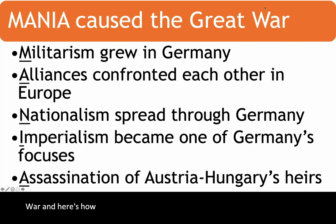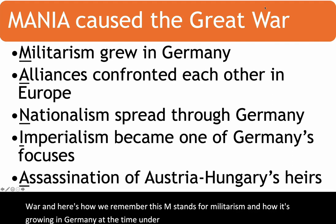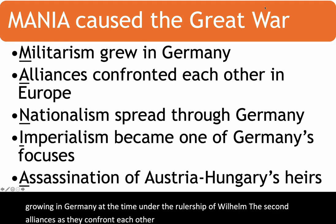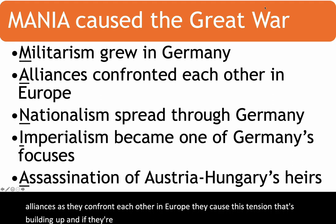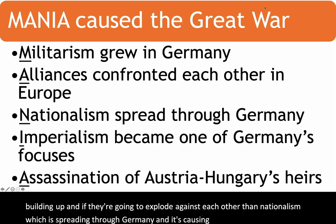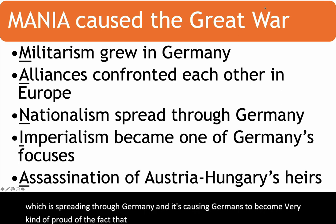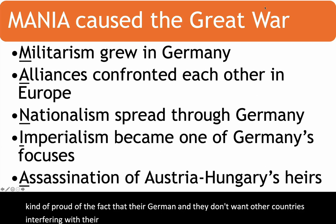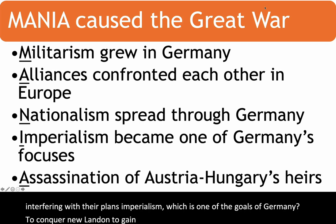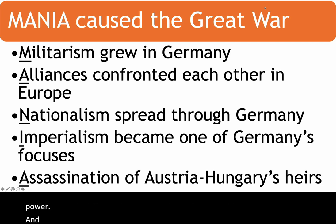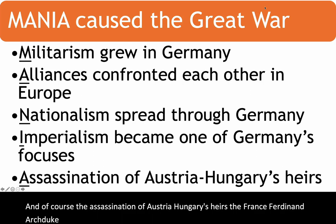Here's how we remember MANIA. M stands for Militarism, growing in Germany under Wilhelm II. A stands for Alliances, which confronted each other in Europe and caused a tension that was going to explode. N stands for Nationalism, spreading through Germany, making Germans very proud and unwilling to have other countries interfere with their plans. I stands for Imperialism — one of Germany's goals was to conquer new land, gain natural resources, and become a world power. And A stands for the Assassination of Austria-Hungary's heirs, Archduke Franz Ferdinand and his wife.